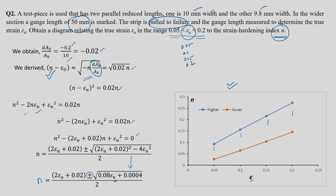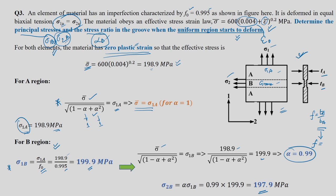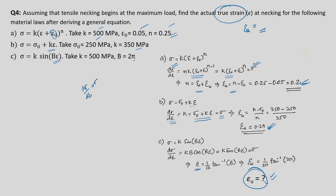We have seen 4 problems in this module. Problem 1 used the maximum load condition at the narrow section to get P_max, then applied it to the wider section to find strain and gauge length. Problem 2 related n, epsilon_u, and imperfection. Problem 3 used von Mises yield function and the heterogeneity factor to find principal stresses in the groove. Problem 4 showed how material law affects instability prediction. Next module we start a new section.